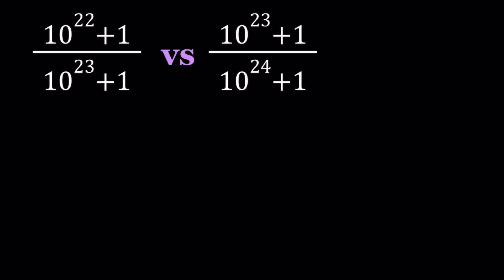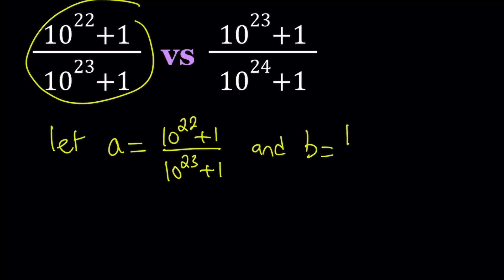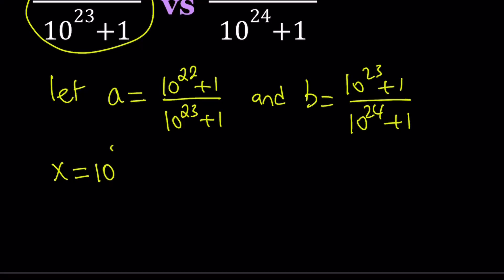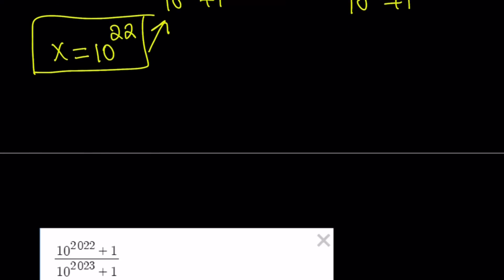So let a equal the first number, which is 10^22 + 1 divided by 10^23 + 1. And b equal 10^23 + 1 divided by 10^24 + 1. And since we see powers of 10 a lot, let's pick the smallest power and call that x. So I'm going to call x equal to 10^22. And now we're going to substitute that into a and b.